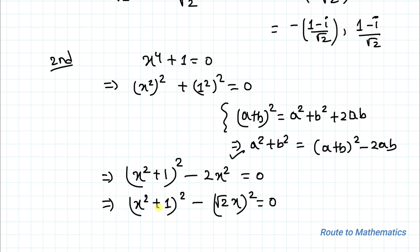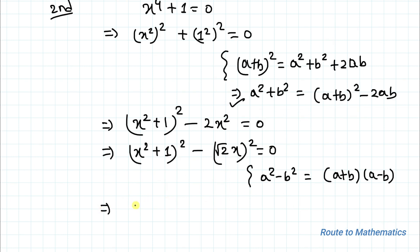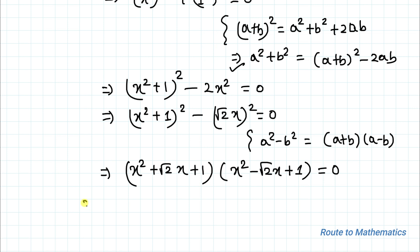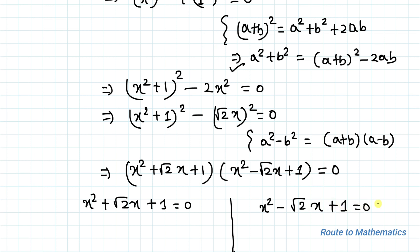This can be written as x squared plus 1 whole square minus root 2 times x whole square equals 0. We can apply the algebraic identity a squared minus b squared equals a plus b multiplied with a minus b. Applying this identity, we get x squared plus root 2 x plus 1, multiplied with x squared minus root 2 x plus 1, equals 0.